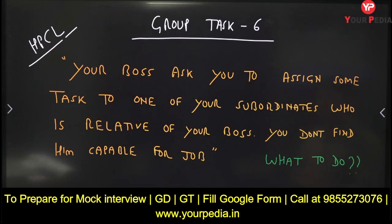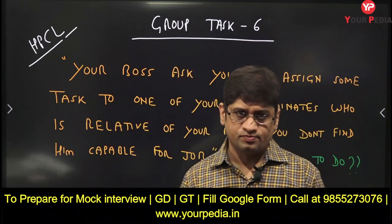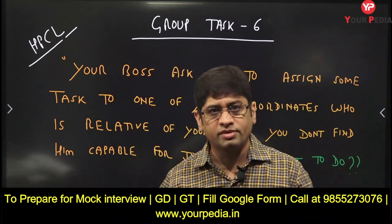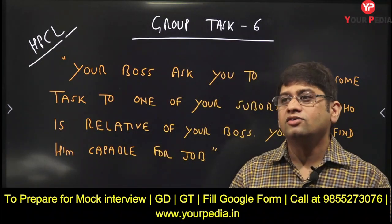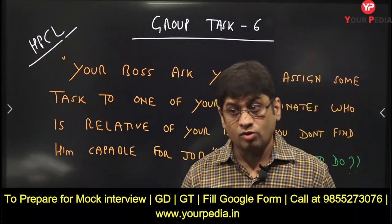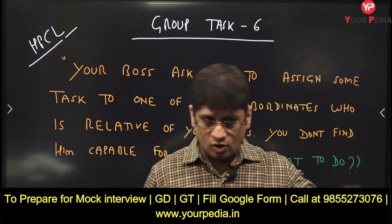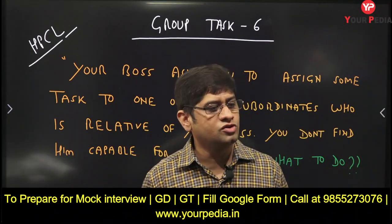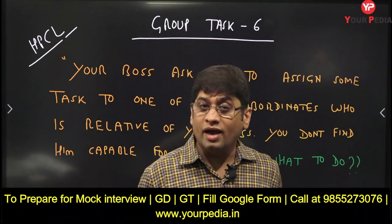Your boss asks you to assign some task, duty, or responsibility to one of your subordinates — and that subordinate is a relative of your boss. Your boss tells you to give the work to Ram Prasad, who is his brother-in-law. The trouble is, I don't have an issue with following the instruction, but Ram Prasad I don't find capable. So your boss tells you to assign this job to Ram Prasad, who works directly under you, but instead you find somebody else more capable for that work. So in this case, what would you do?